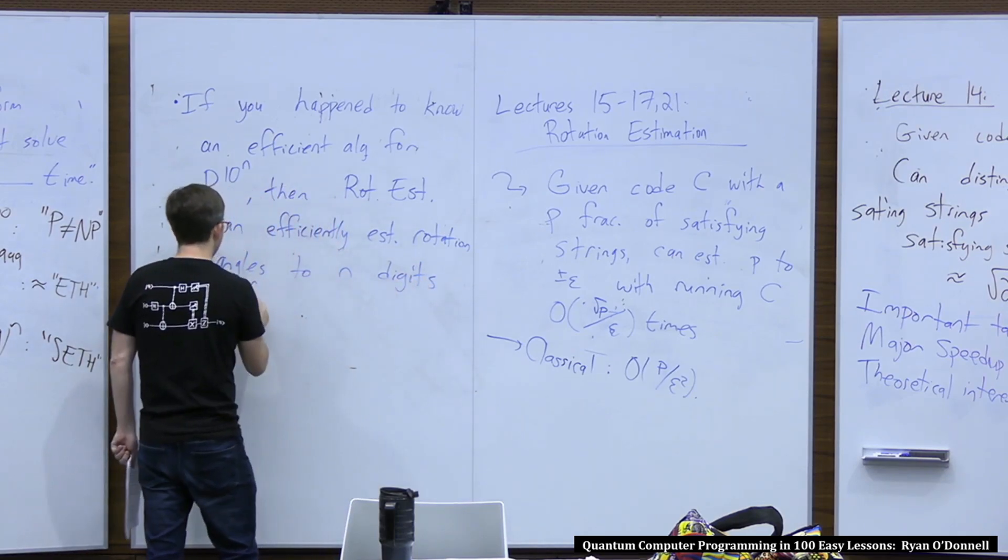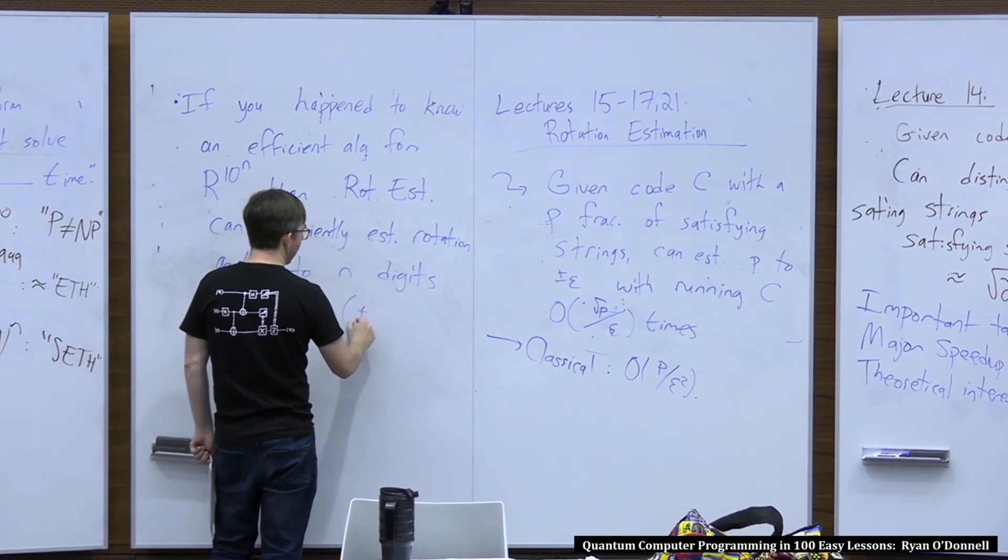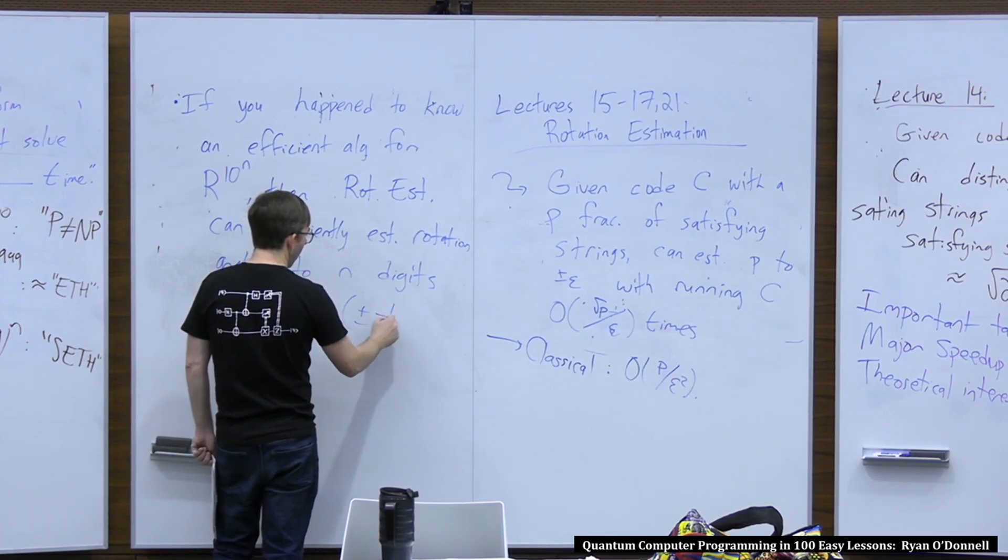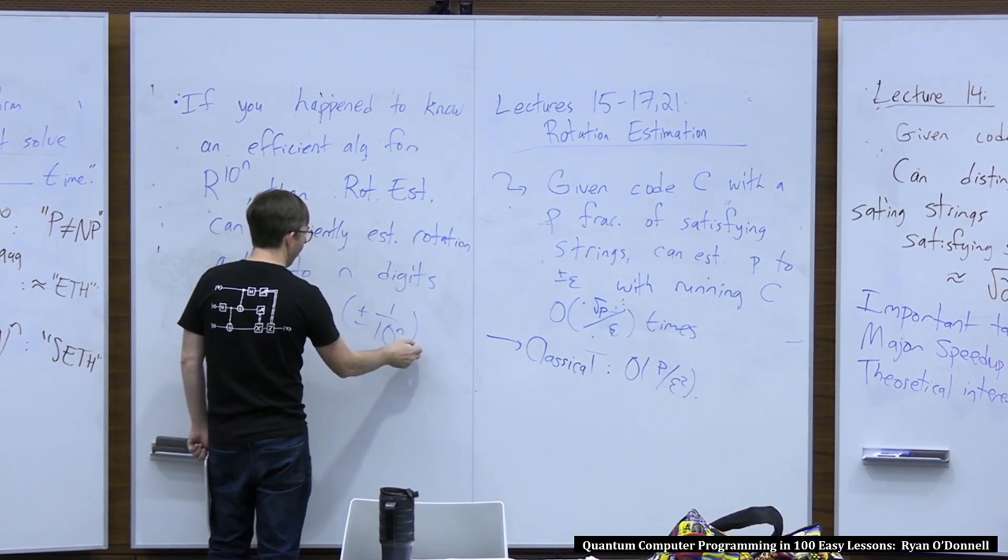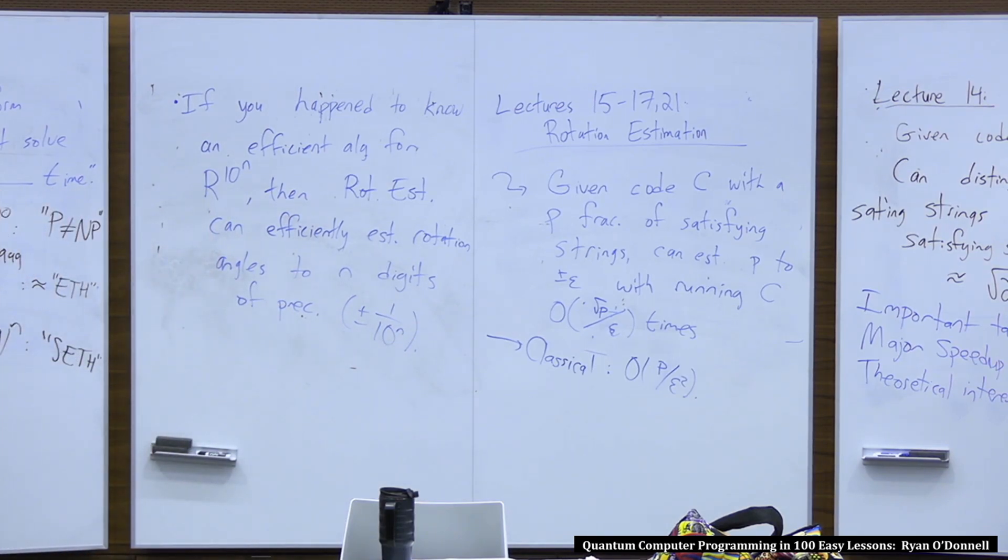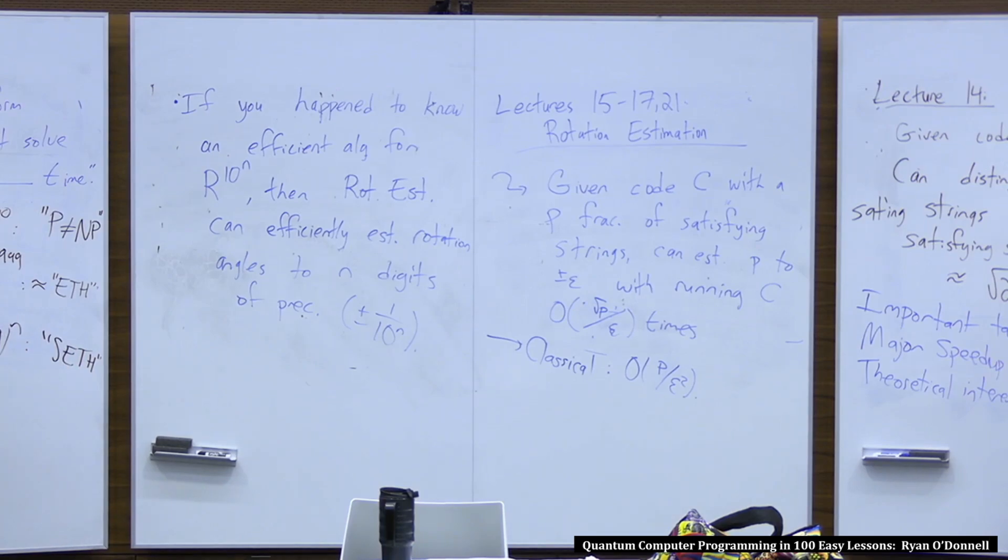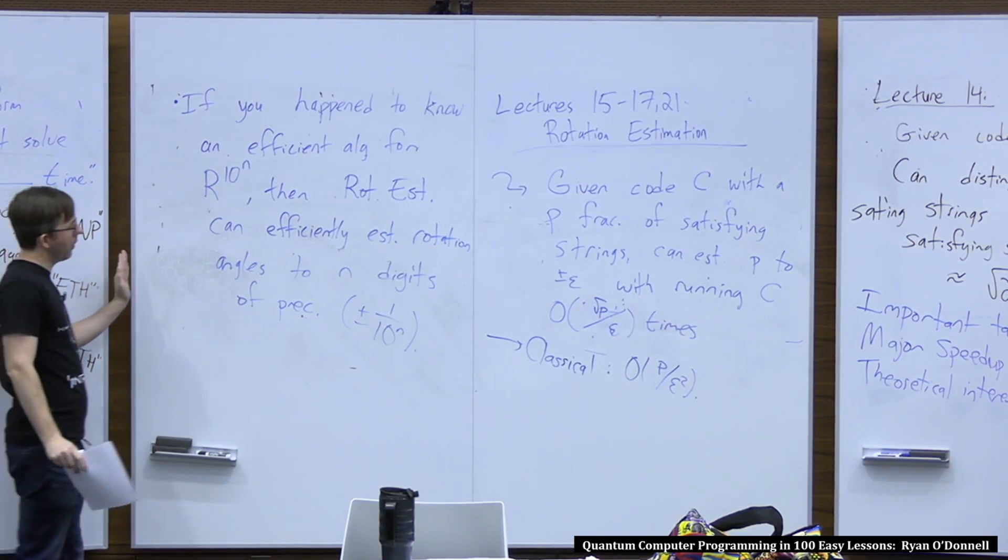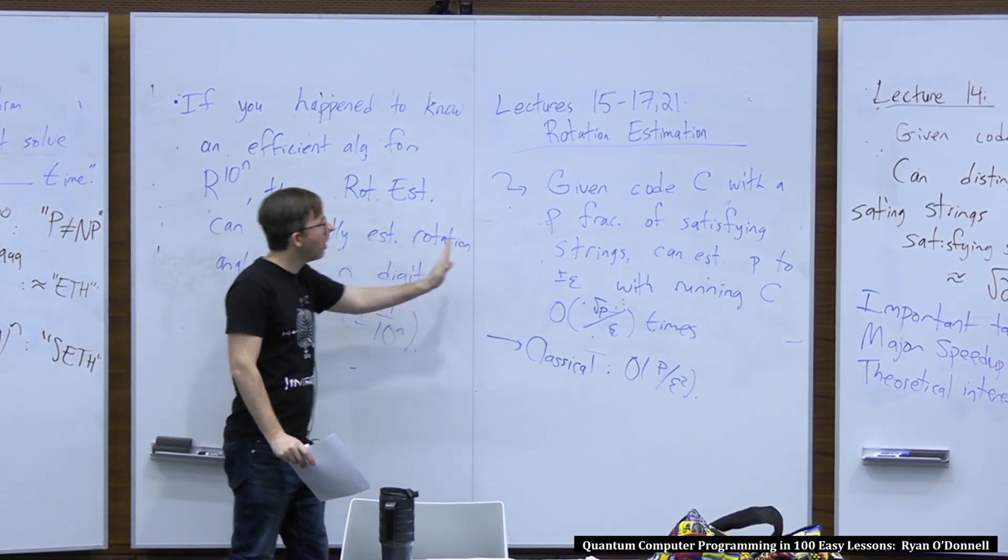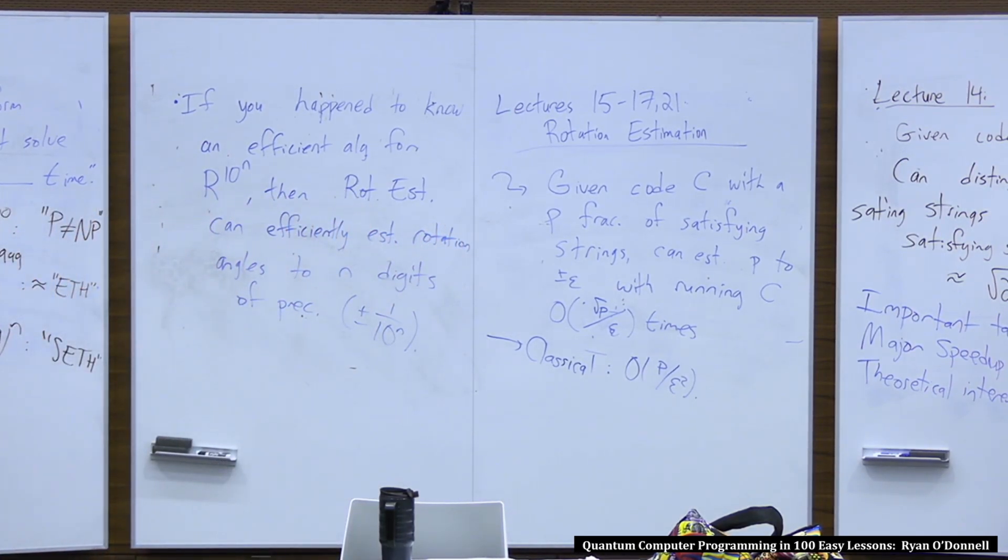So you can efficiently estimate rotation angles to like n digits of precision. You know, maybe n is like 1,000. So this is kind of like estimating it to plus or minus 1 over 10 to the n. And that's kind of cool if you can do it. It's almost like an algorithm that if you think about the angle that r is rotating as it got like a thousand digits long, it's kind of like you have like a separate algorithm for estimating each of the digits. So you don't just do that by trying to get a really precise measurement of how much rotation is happening, but there's like a magic trick for estimating the digits separately.